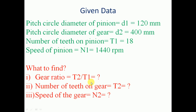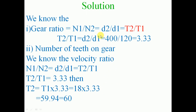First, we find the gear ratio, given by t2/t1. The gear ratio of a gear drive is expressed as n1/n2 = d2/d1 = t2/t1. The gear ratio equals d2/d1 = 400/120 = 3.33.